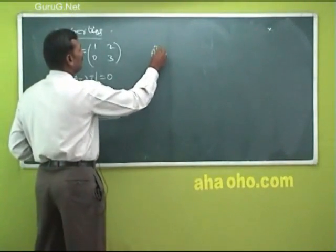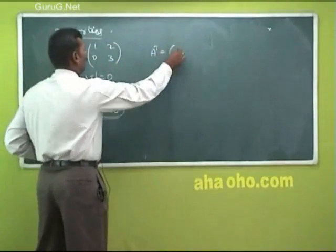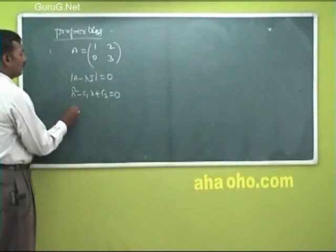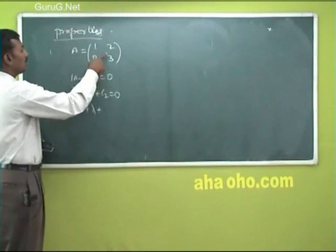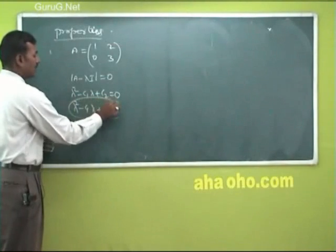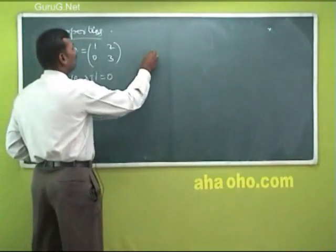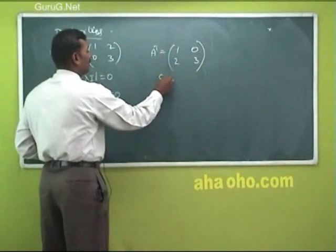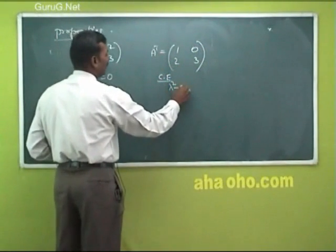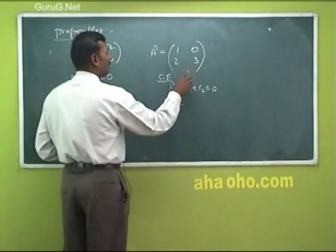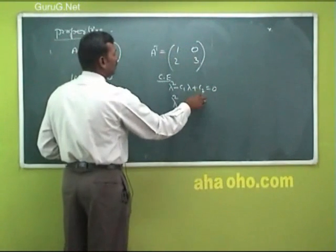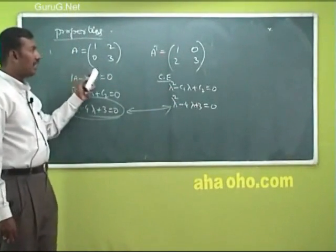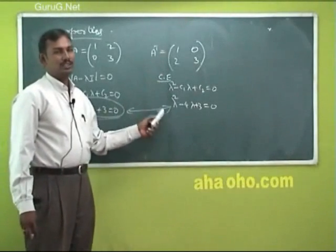Now, what is A transpose? Interchanging rows into columns gives [1, 0; 2, 1; 2, 3] — again a 2 by 2 matrix. The characteristic equation is again lambda squared minus C1 lambda plus C2 equal to 0, where C1 is the sum of the diagonal elements, so 4, and C2 is the determinant, so 3. So these two characteristic equations are equal, meaning the eigenvalues of A and A transpose are equal. That is the first property.